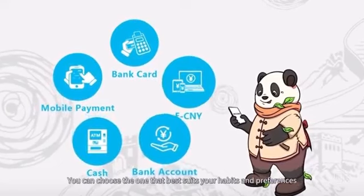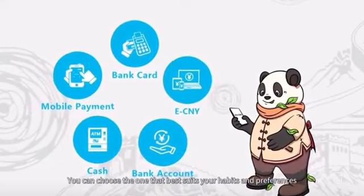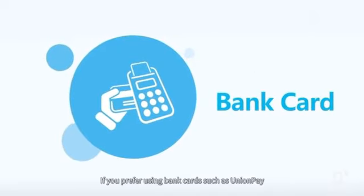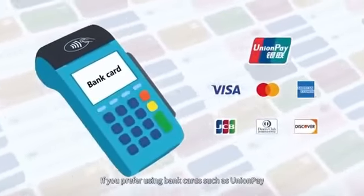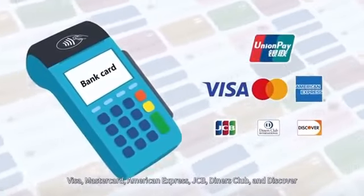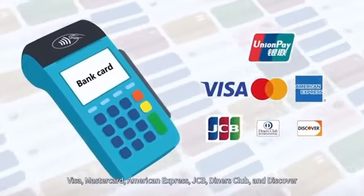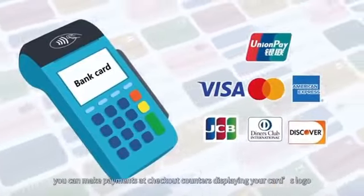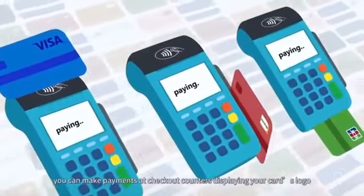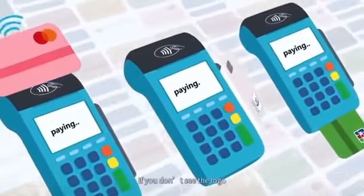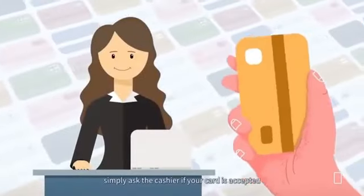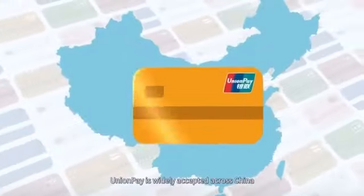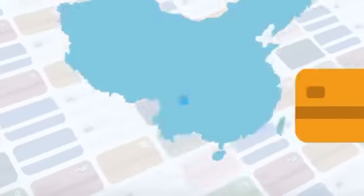You can choose the one that best suits your habits and preferences. If you prefer using bank cards such as Union Pay, Visa, Mastercard, American Express, JCB, Diners Club, and Discover, you can make payments at checkout counters displaying your card's logo. If you don't see the logo, simply ask the cashier if your card is accepted. Union Pay is widely accepted across China.